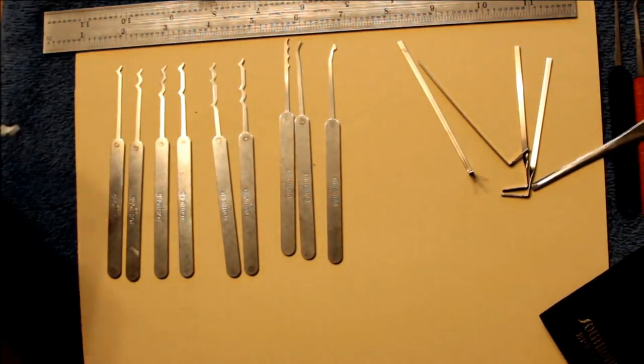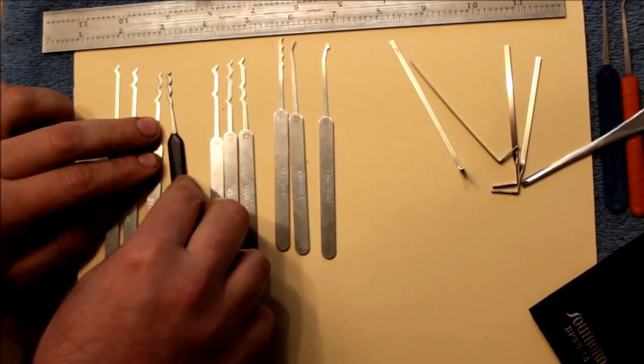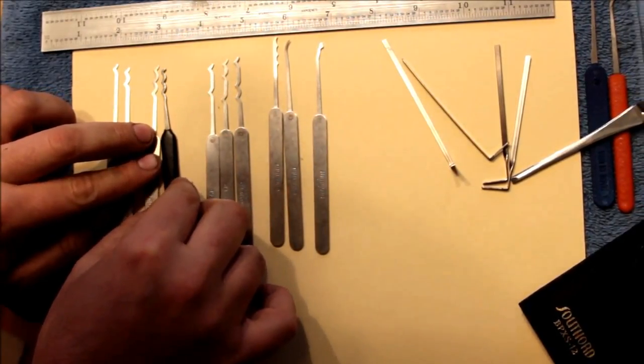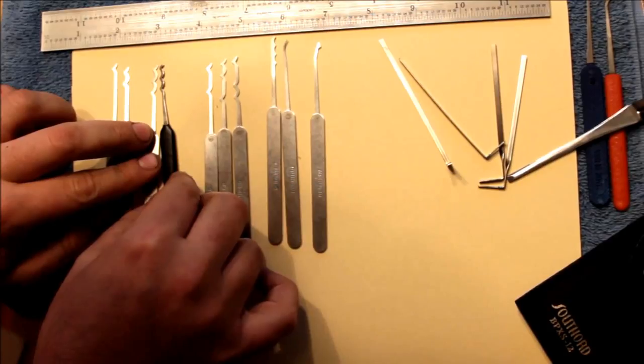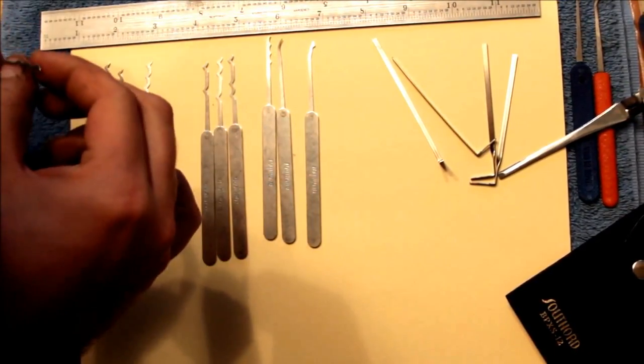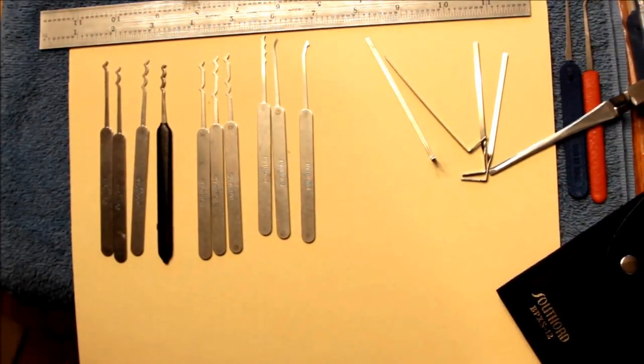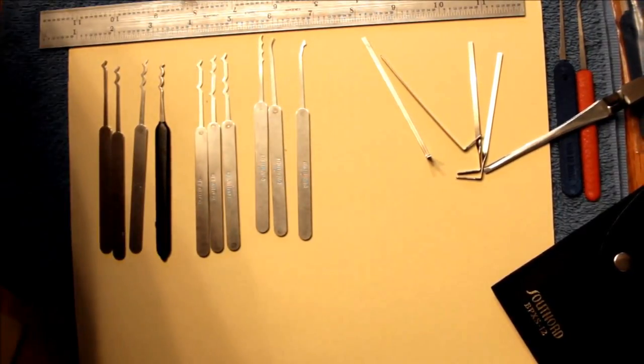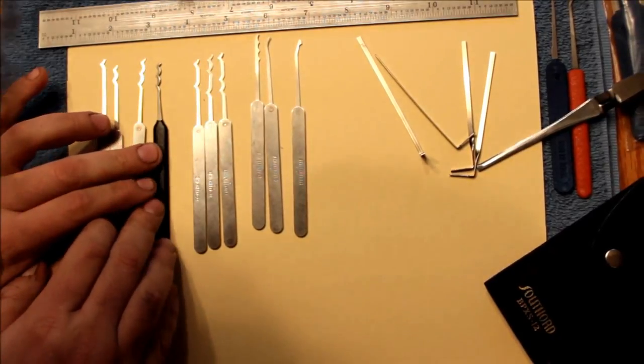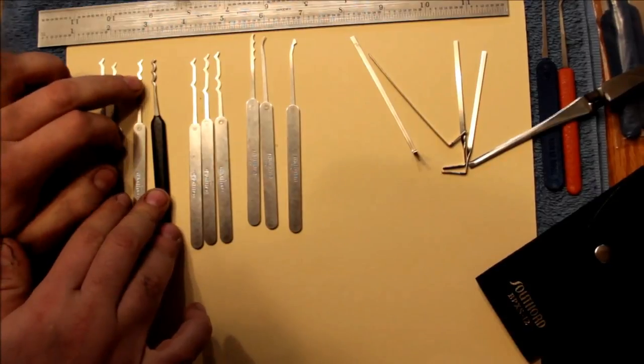Just to give you a comparison in shape, this is the Sparrows Bogota, I believe. So the pitch is a little bit different on these. It's a little further apart. I believe that's the Bogota. I hope that's not the snake. They're kind of hard to tell apart, but the pitch is a little bit different.